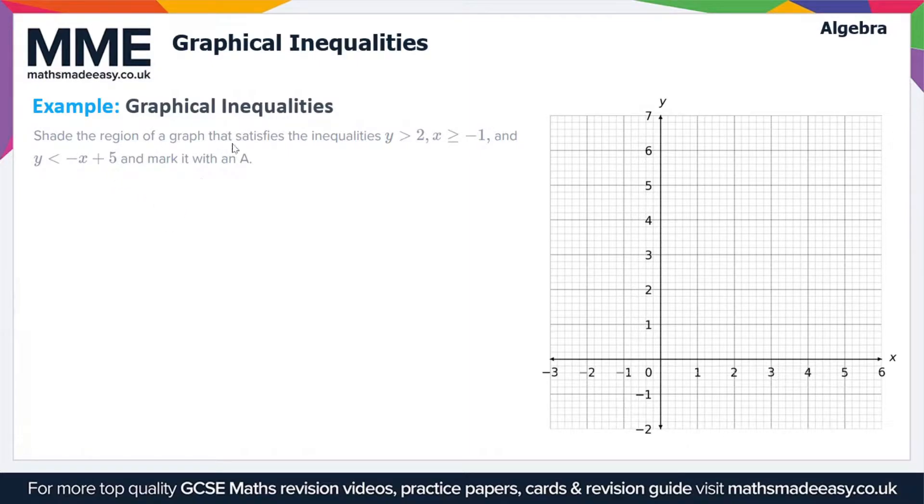Now let's just remind ourselves that strict inequalities - so that's less than or greater than - these are represented by a dashed line on a graph. And then inclusive inequalities - that's less than or equal to or greater than or equal to - these are represented by a solid line on a set of axes.